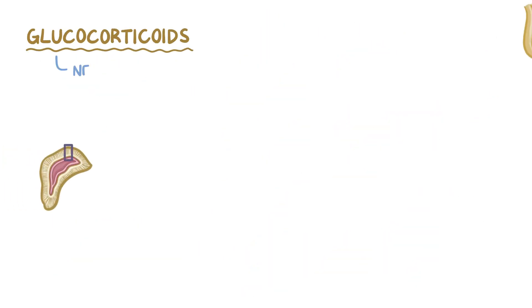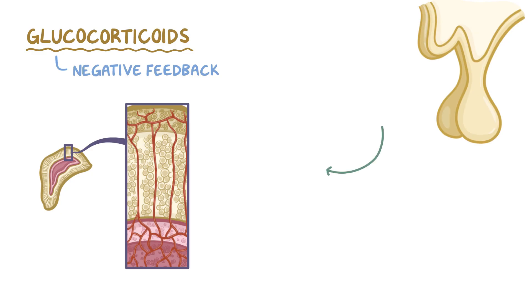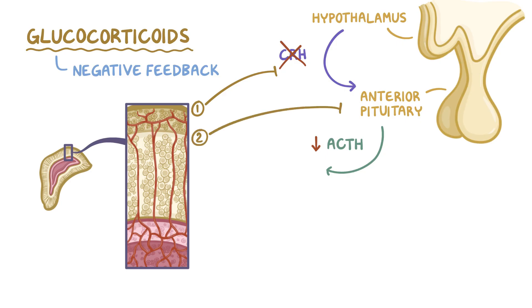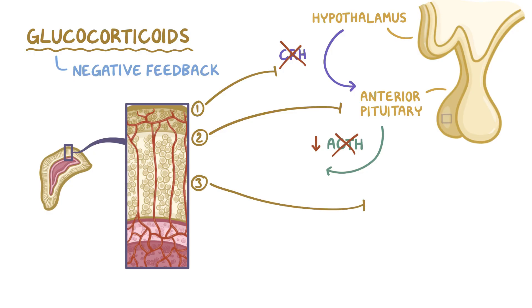Glucocorticoids are involved in a few negative feedback loops to control the release of adrenocorticotropic hormone. First, glucocorticoids signal the hypothalamus to stop secreting corticotropin-releasing hormone, which in turn decreases anterior pituitary secretion of ACTH. Second, glucocorticoids signal directly into the anterior pituitary to stop the release of ACTH. And third, glucocorticoids may also inhibit the rates of pre-proopiomelanocortin synthesis in the corticotroph cells.